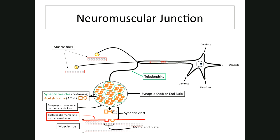Muscle contraction is an all-or-none event. A muscle fiber never partially contracts — the muscle fibers of a motor unit will either fully contract or not contract at all. All the sarcomeres in a given muscle cell will respond, or none of them do. It's like a light switch: it's either on or off.